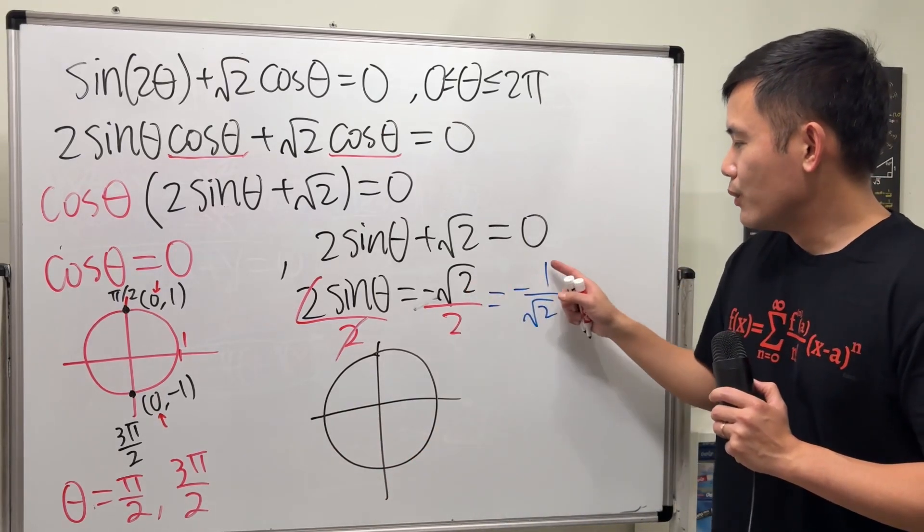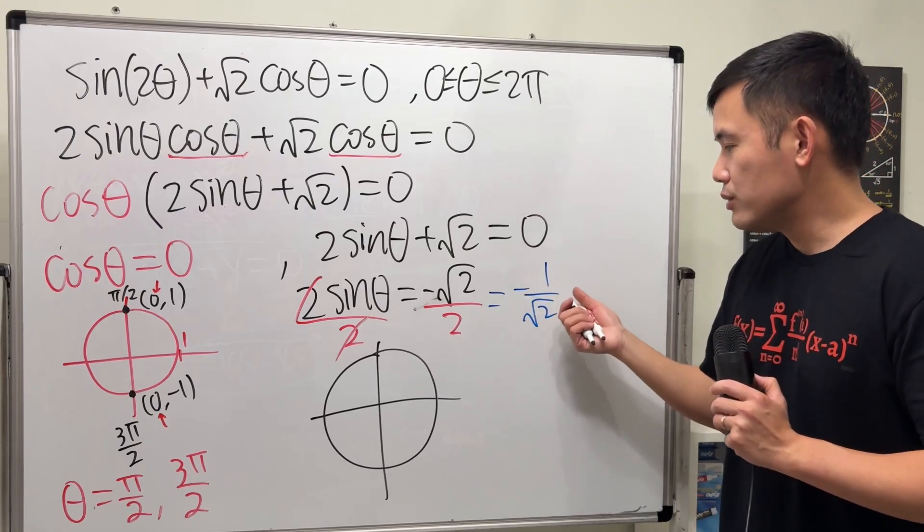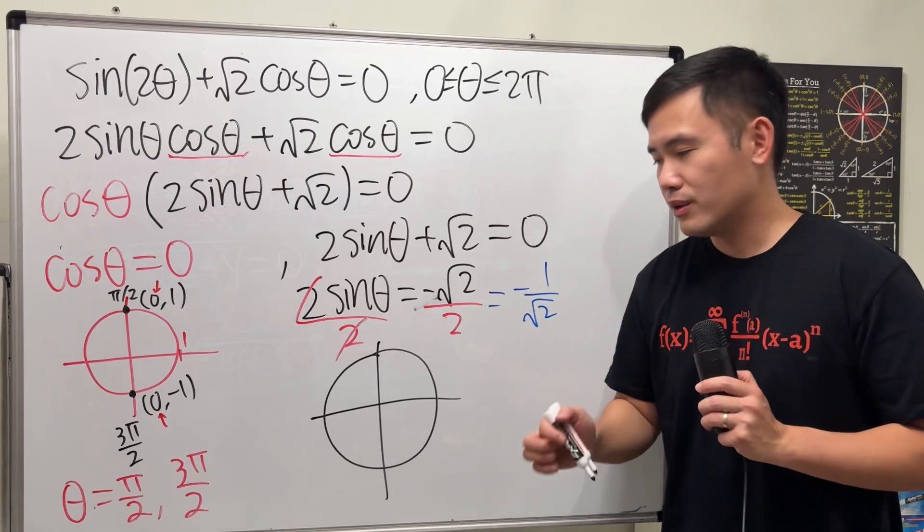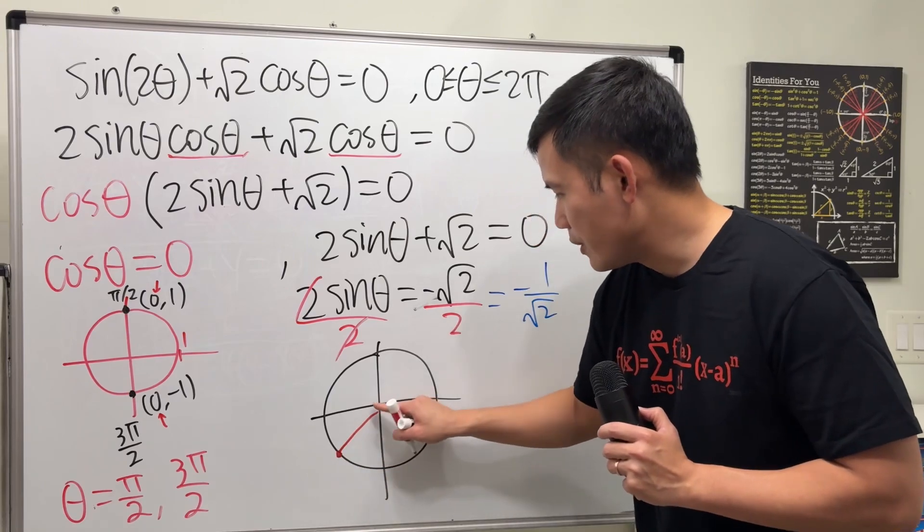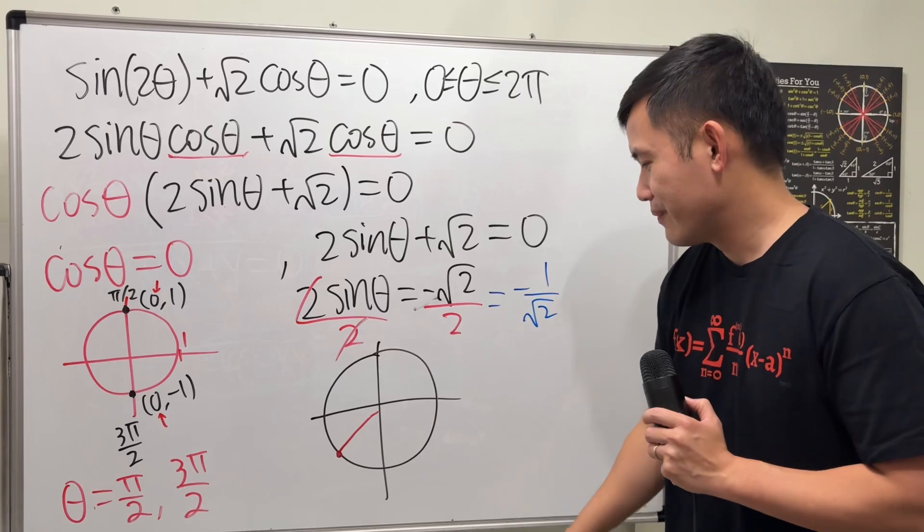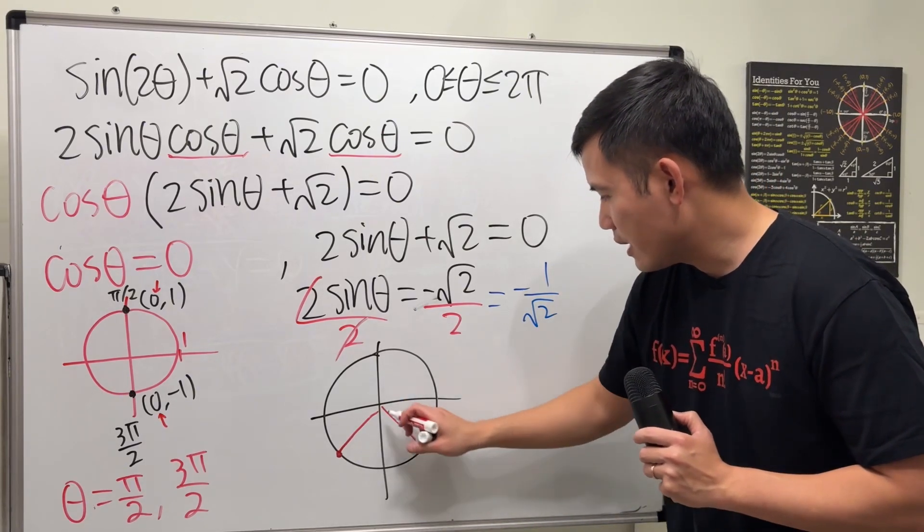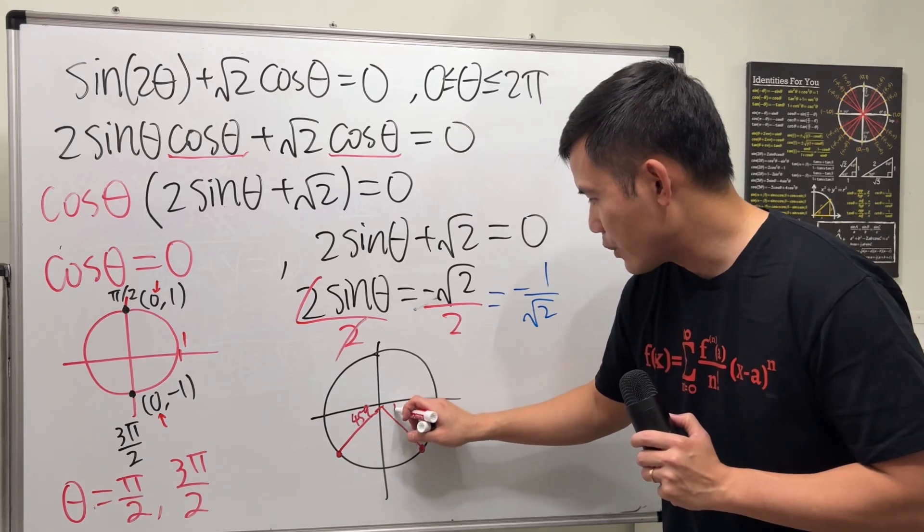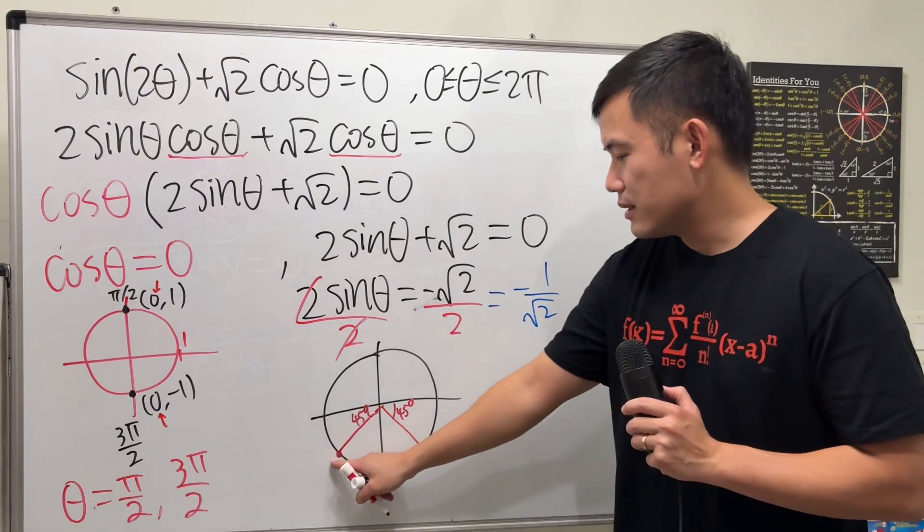And when you have negative 1 over square root of 2, that should remind you of the 45-45-90 special right triangle. And in fact, it is going to be right here with this angle being 45. So the whole thing is 225. And then another answer from here to here. Again, this reference angle is really just 45 degrees. Likewise, this is also 45 degrees.